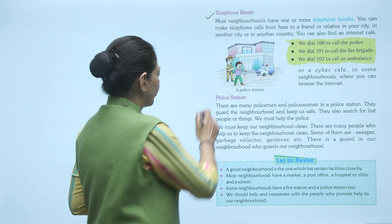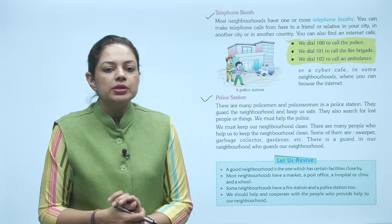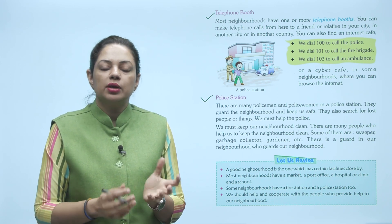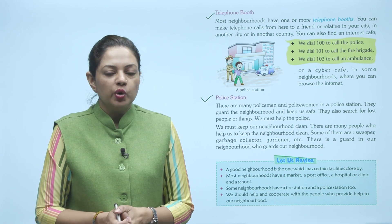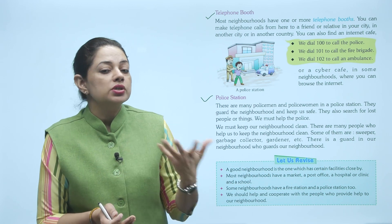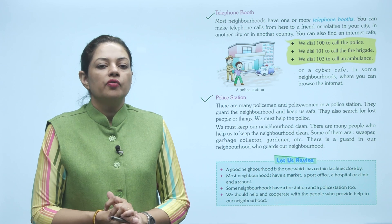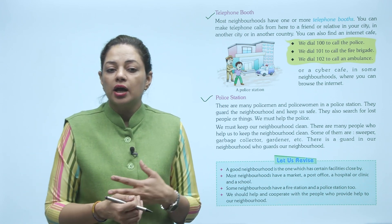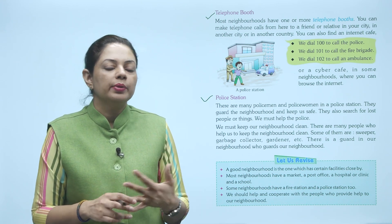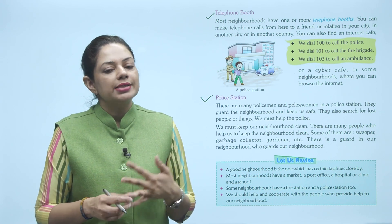Next is police station. There are many policemen and policewomen in a police station — ek police station mein bahut saare police men aur police women hoti hain. They guard the neighborhood and keep us safe — voh hamare neighborhood ko suraksha dete hain aur hameein surakshit rakhte hain. They also search for lost people or things. Aur koi aadmi gum ho jaata hai, koi cheezein gum ho jaati hain, toh unhe dhoondne mein bhi help karte hain. We must help the police.